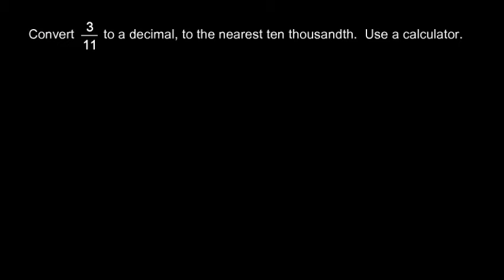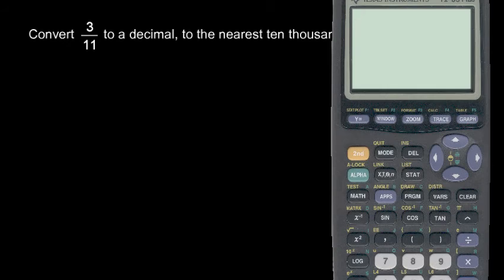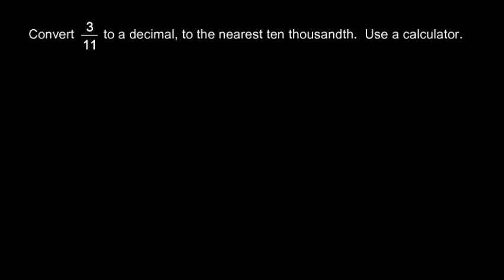Here's another example. We're told to convert 3 elevenths to a decimal to the nearest ten thousandth, and we're told to use a calculator. I need to do 3 divided by 11. And look at that — .272727272727, and those digits in fact go on forever. I'm told to round to the nearest ten thousandth, which is the fourth decimal place. I look one digit beyond that and see it's less than five, so I don't round up. The answer is .2727.